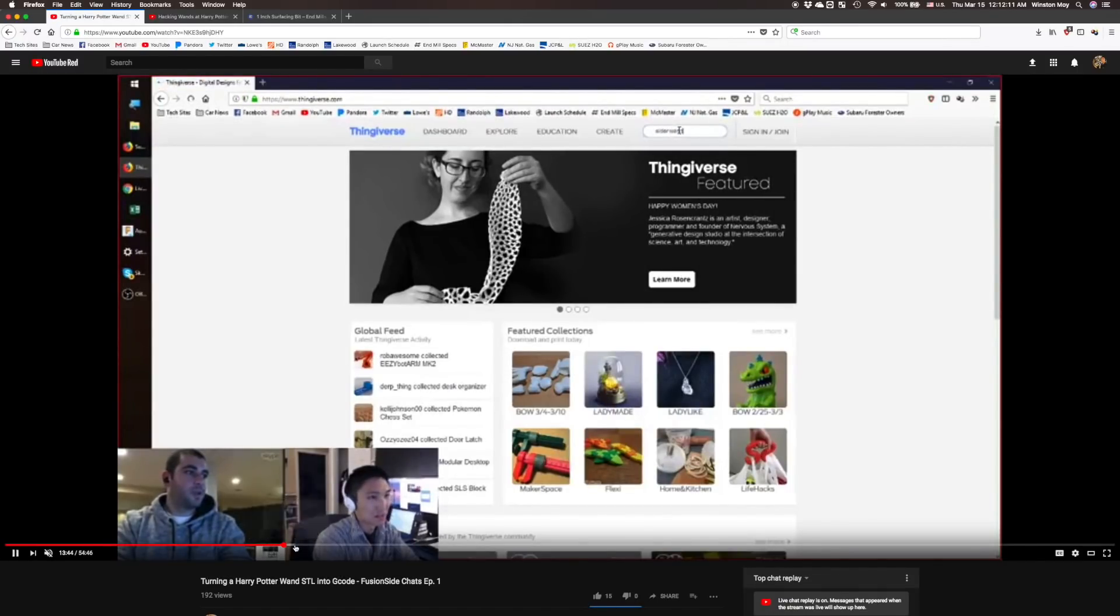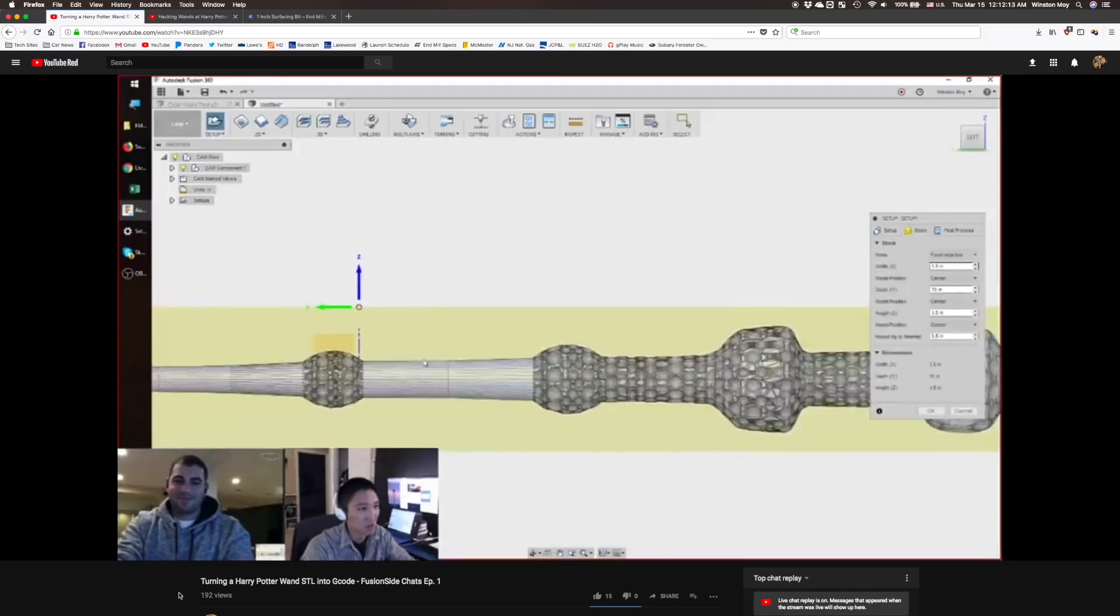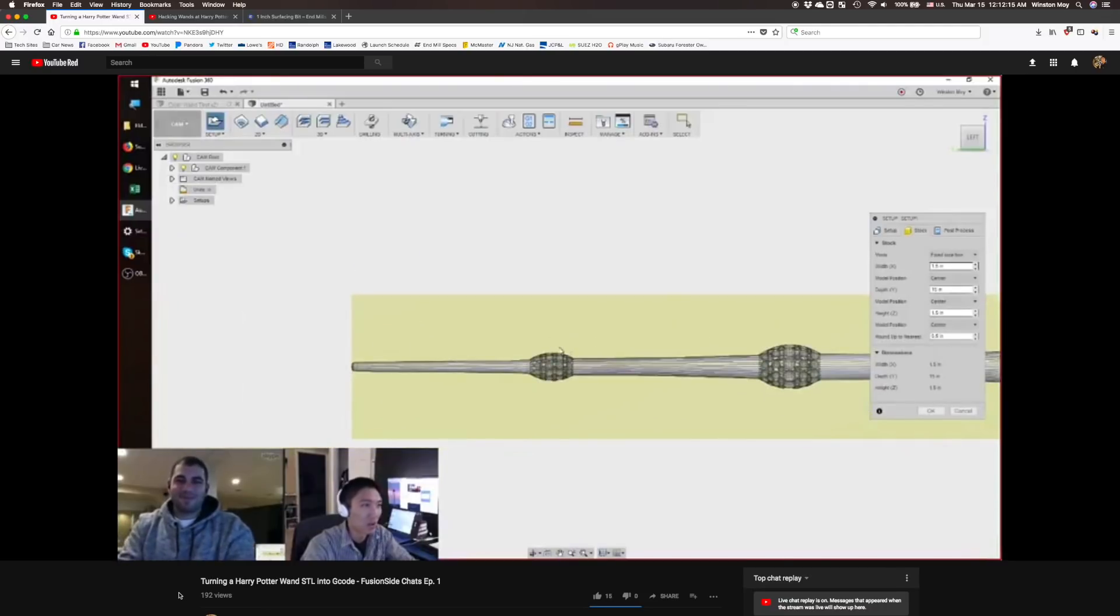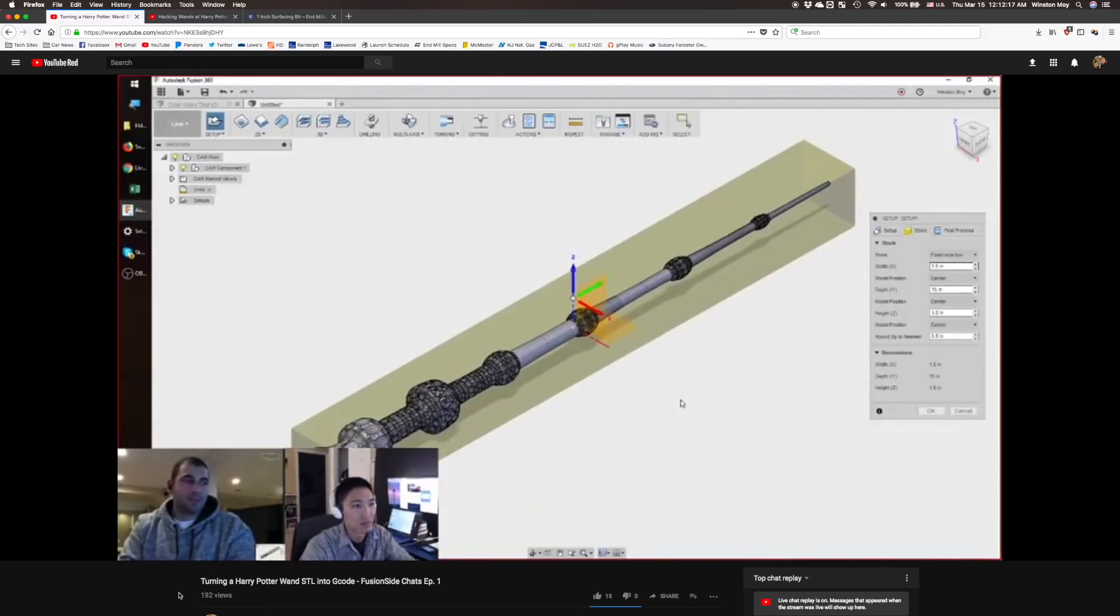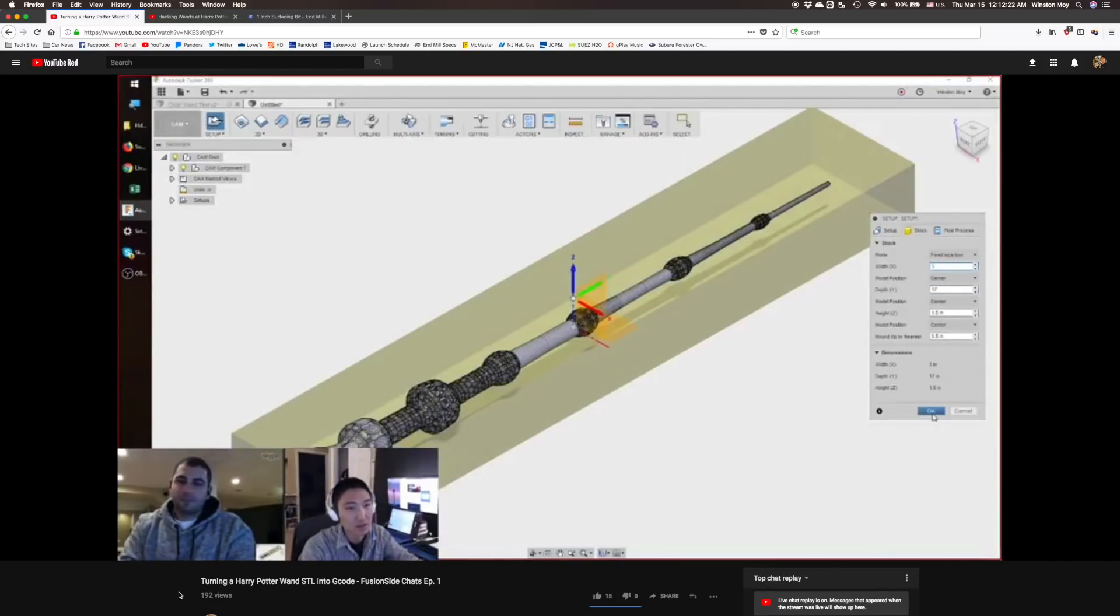I picked a one-piece STL file of the Elder Wand from Thingiverse and brought it into Fusion 360 to prepare. If you want details about how to set up an STL file in Fusion 360, check out my last video or the livestream. Links will be available in the description below.